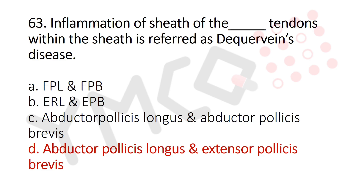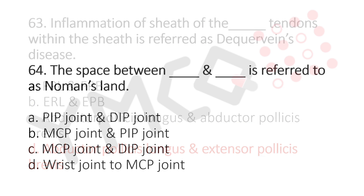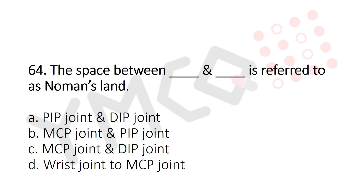Question 64: The space between which two structures is referred to as No Man's Land? Option A: PIP joint and DIP joint, Option B: MCP joint and PIP joint, Option C: MCP joint and DIP joint, Option D: wrist joint to MCP joint. The answer is Option B, MCP joint and PIP joint.